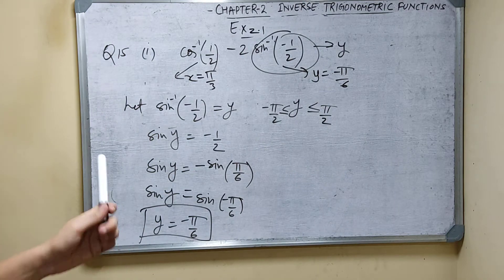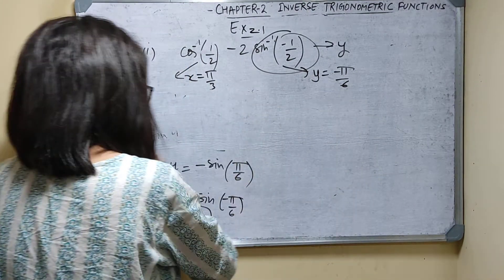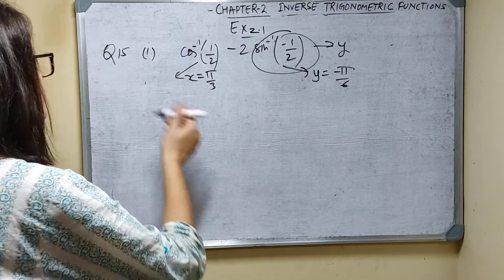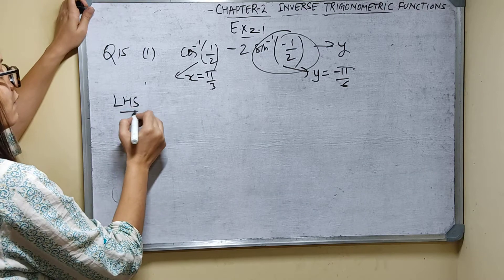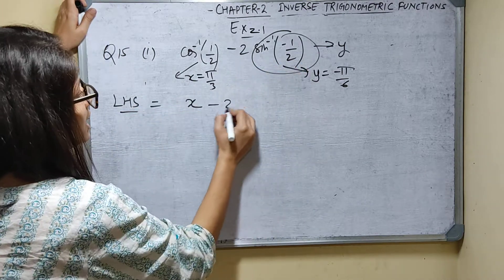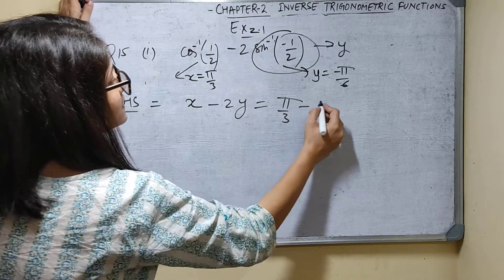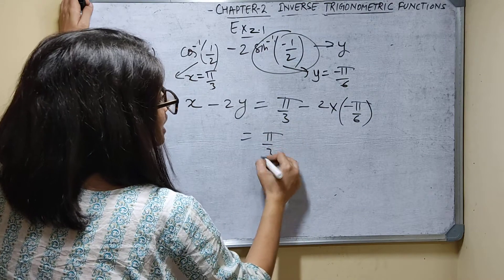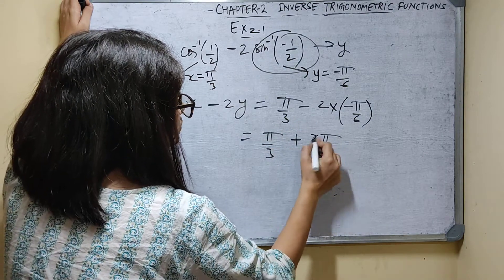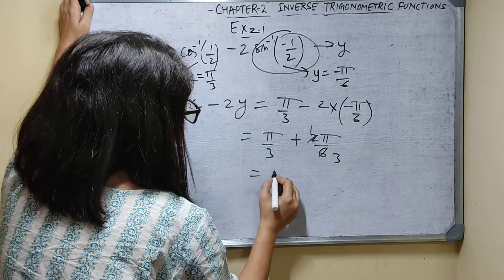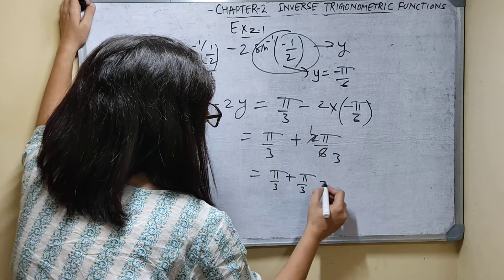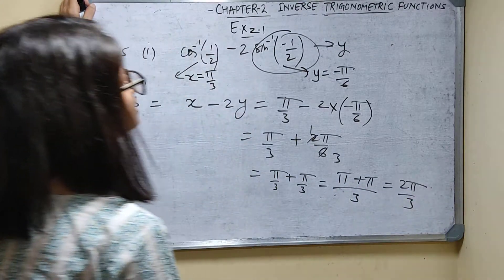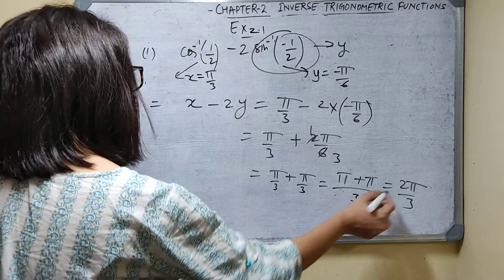Now substituting into LHS: x minus 2 times y = pi by 3 minus 2 times (minus pi by 6) = pi by 3 plus 2 pi by 6 = pi by 3 plus pi by 3 = 2 pi by 3. So the value is 2 pi by 3. This is the answer.